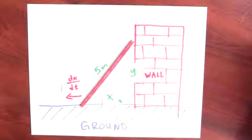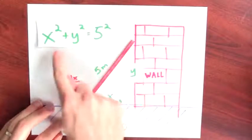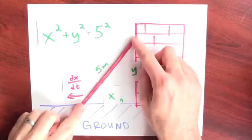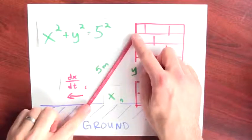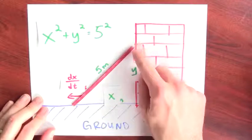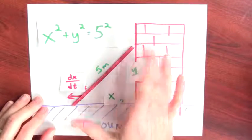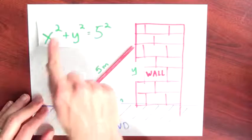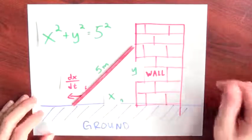So now I've labeled everything on my picture. So the equation here is just x² + y² = 5², because this ladder, even as it slides down the side of the wall, it still makes a right triangle with this leg, this leg, and this is the hypotenuse. And the length of the ladder doesn't change. It's always 5 meters long. So the Pythagorean theorem tells me that x² + y² = 5².